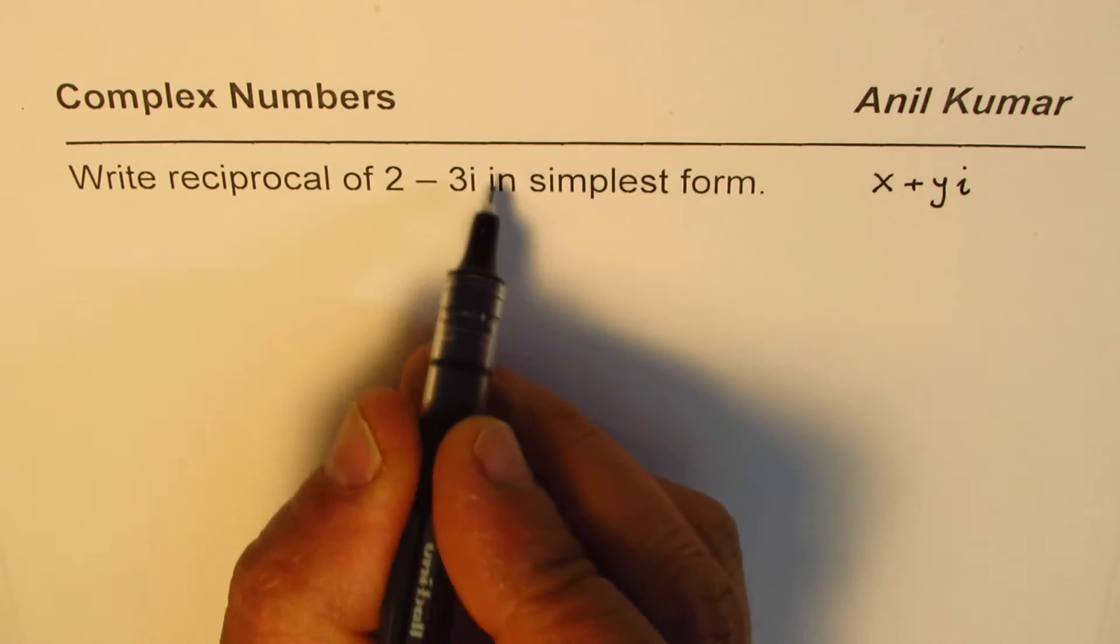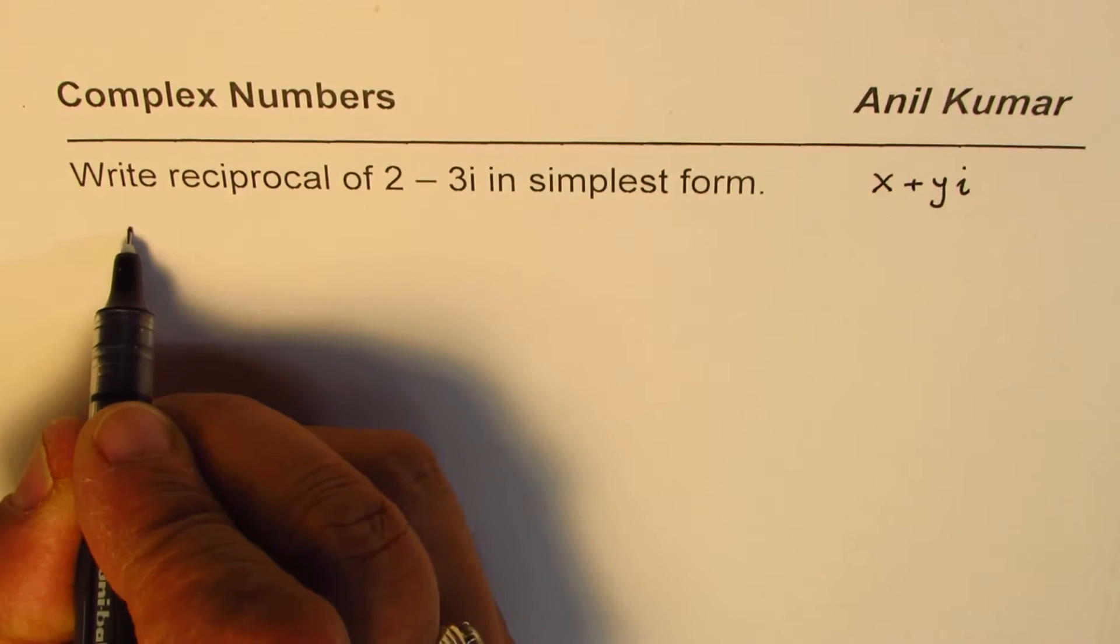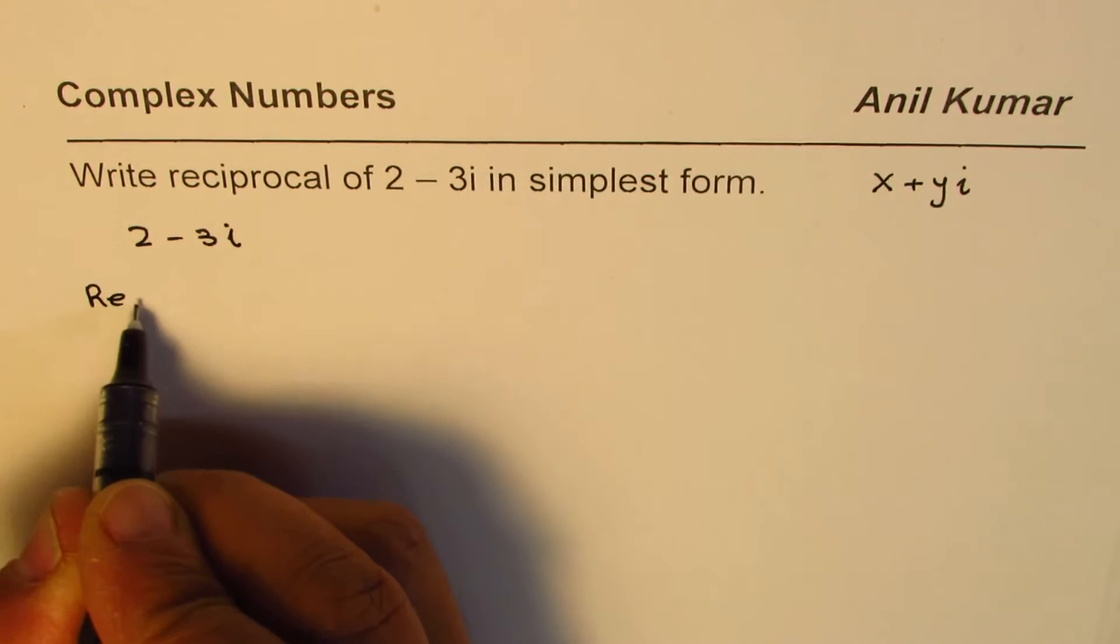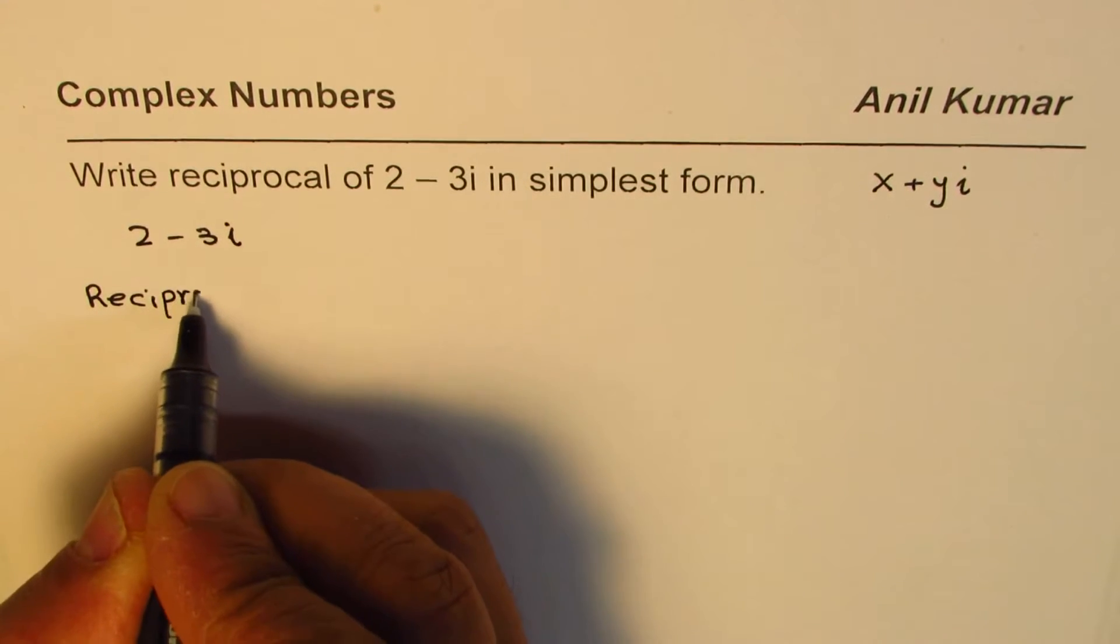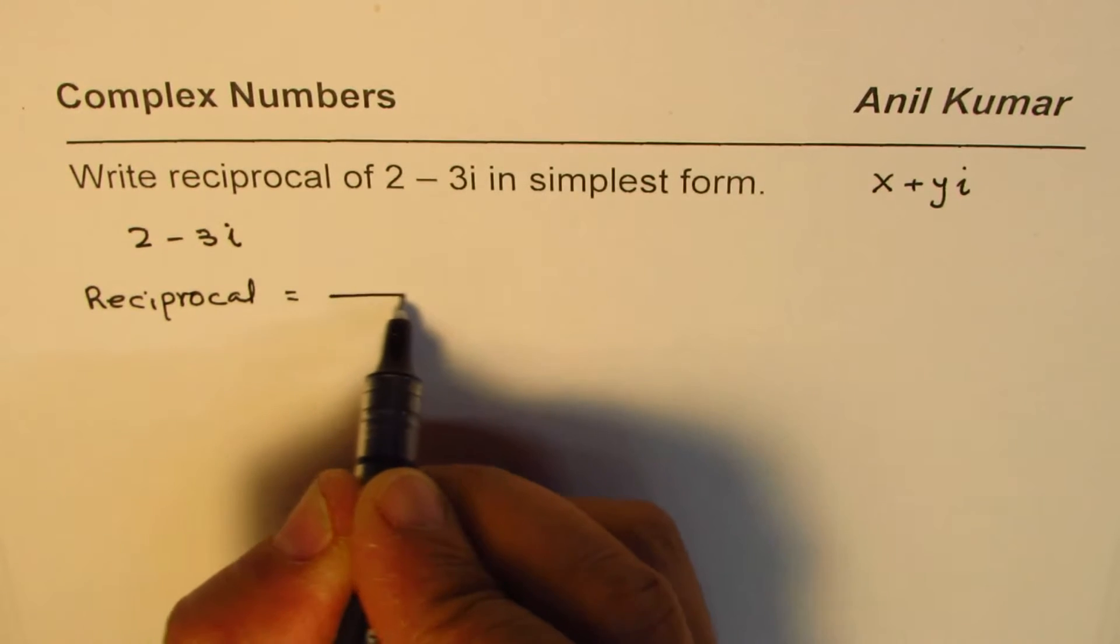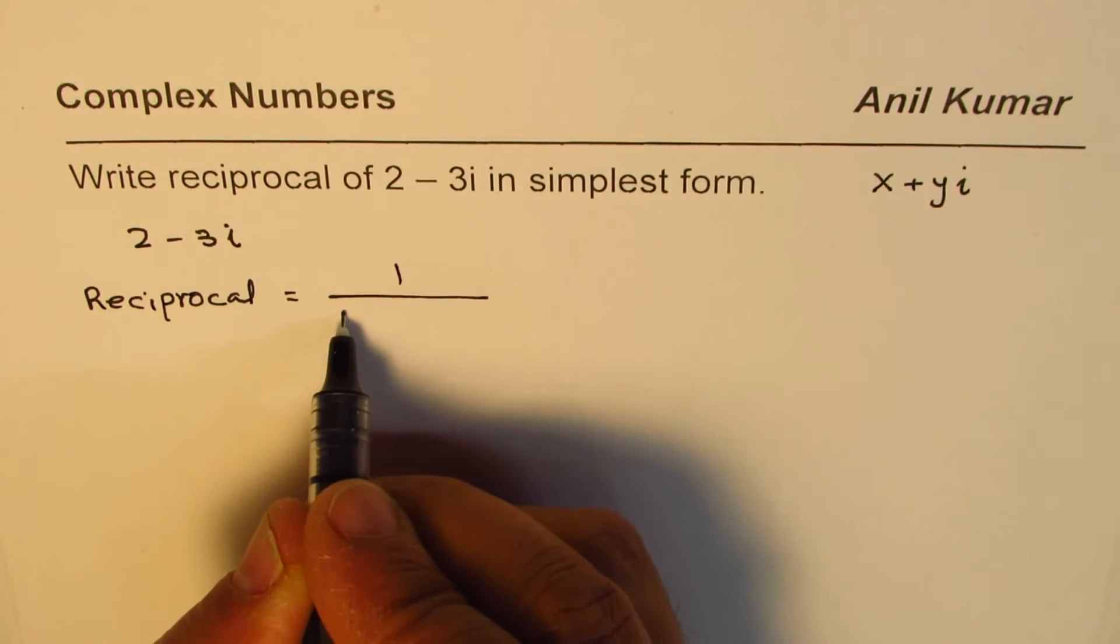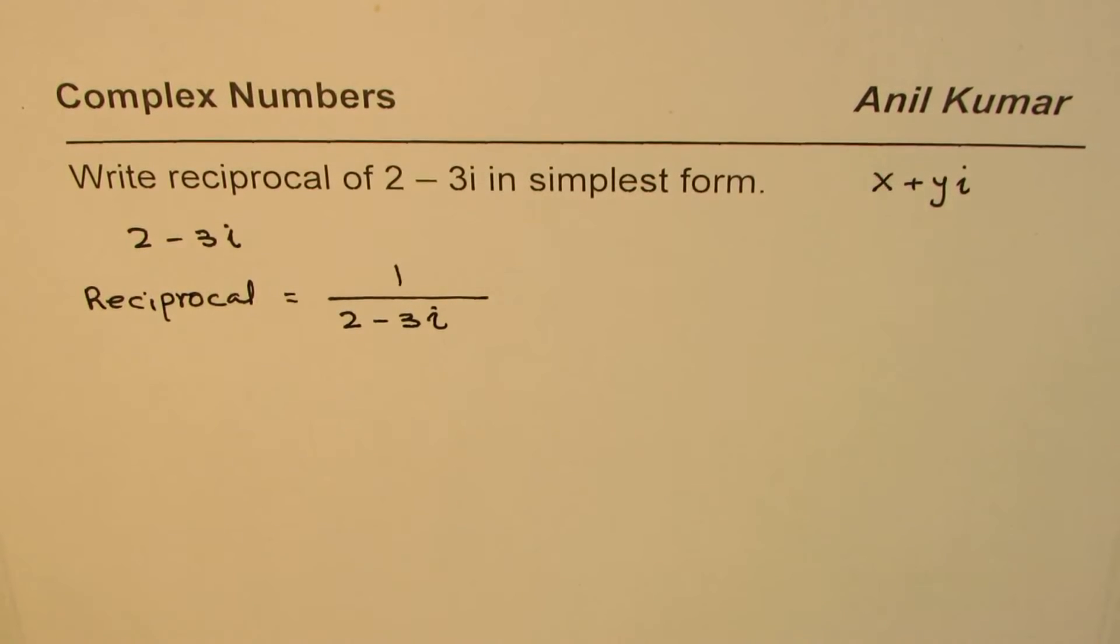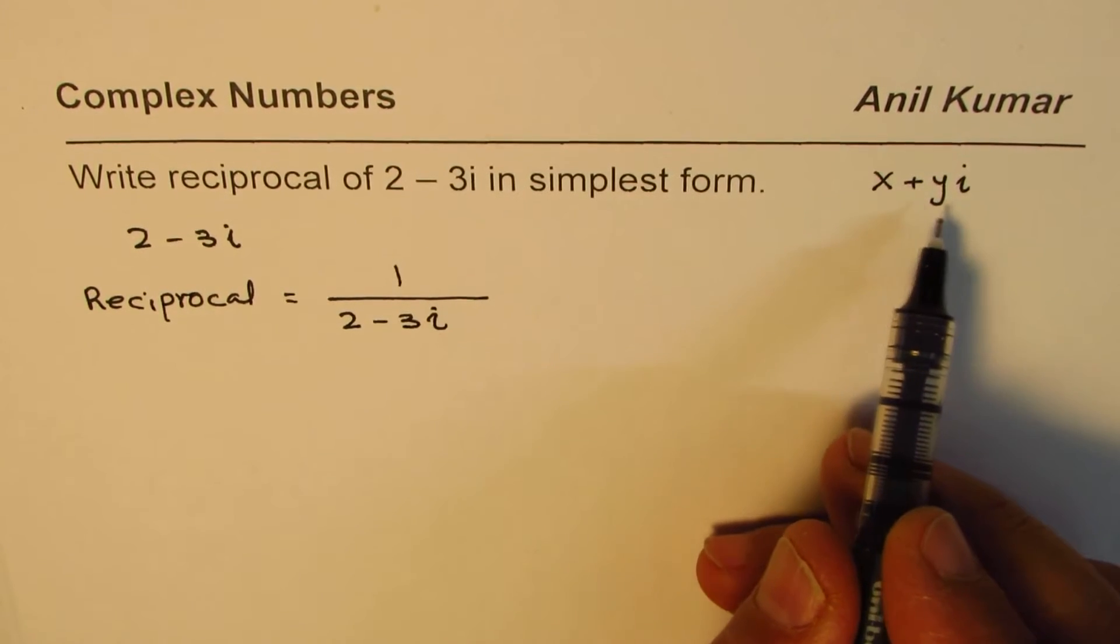Reciprocal is 1 over the number. We are given 2 minus 3i. Reciprocal will be 1 over the given number, which is 2 minus 3i. That is the reciprocal. To write it in the form x plus yi, we need to rationalize it.